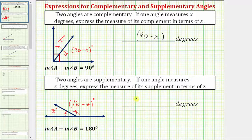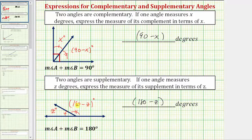So again we enter 180 minus z; the units of degrees are already here. As an example, if z equals 50, this angle measures 50 degrees, and this angle measures 180 minus 50, which equals 130 degrees. I hope you found this helpful.